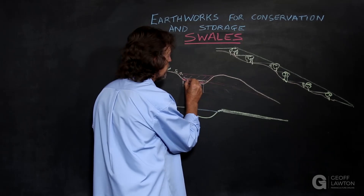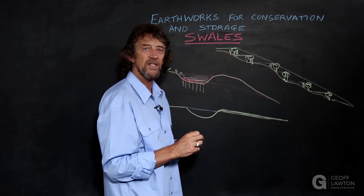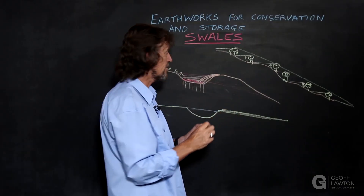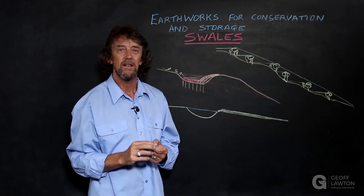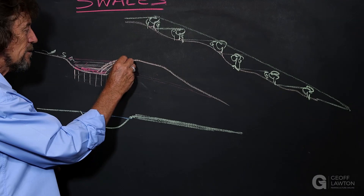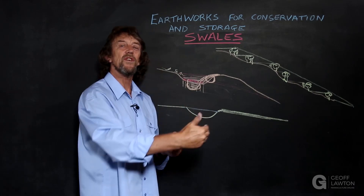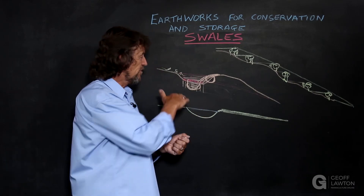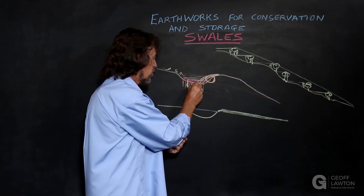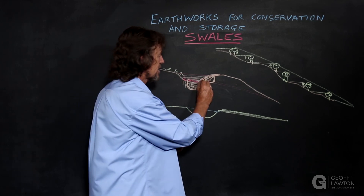Swales naturally build soils and increase fertility. Over a long period of time, they will start to fill up and become level terraces — but by then you've got a large forest and you don't need the swale. You can side-cast material out onto the mound and increase it, or keep redressing it. You can even put domestic waste and organic matter into buried pits in a swale, which fill with water and become rich soil deposits in the mound or trench.